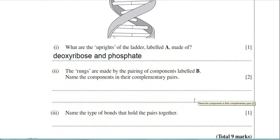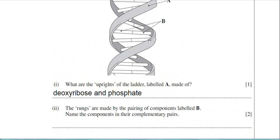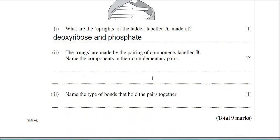Part two then, the rungs are made of the pairing of components labeled B. Name the components in their complementary pairs. So these rungs are actually the bases, and there are four bases: thymine, adenine, guanine and cytosine. You do have to mention them in their complementary pairs, though. So it's no good just stating the bases in any order. You have to put them in their pairs.